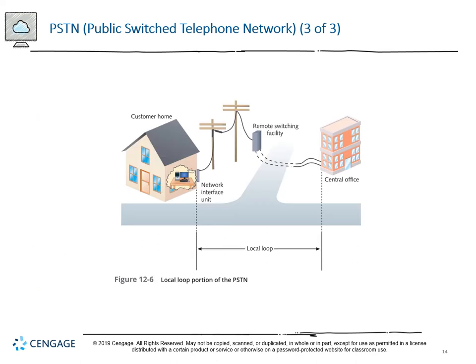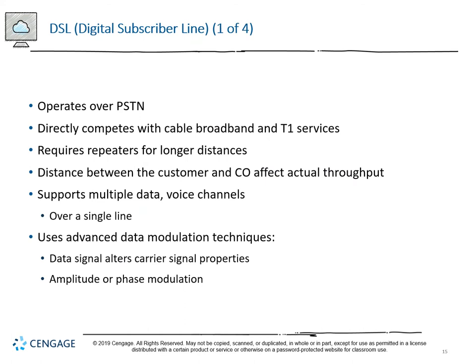Here we see the local loop portion of the PSTN - the CO, the remote switch facility, the network interface unit (also called a junction box), and the customer's home. If you have an older home, you'll see that junction box on the outside, probably gray plastic saying Bell South on the side. DSL operates over PSTN and directly competes with cable broadband and T1. It requires repeaters for longer distances, and the distance between the customer and the CO affects actual throughput due to attenuation. DSL supports multiple data and voice channels over a single line using modulation techniques, separating signals by means of filters.